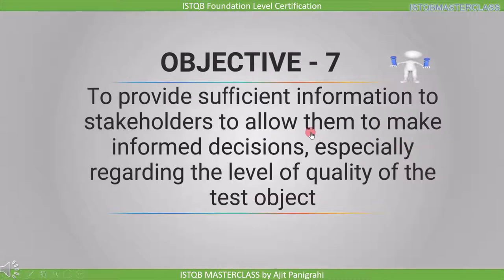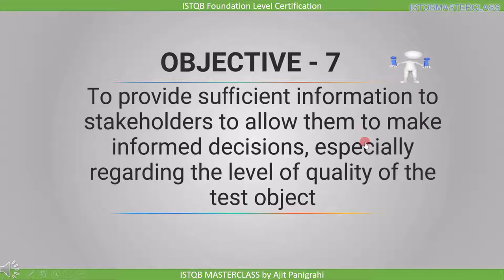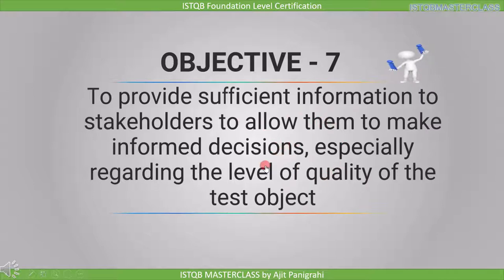The seventh objective is to provide sufficient information to stakeholders to allow them to make informed decisions, especially regarding the level of quality of the test object. When we find defects, it is not necessary that we fix all of them before release. What we can do is provide sufficient information to the stakeholders so that they can make decisions based on the defect and the risk associated with it.